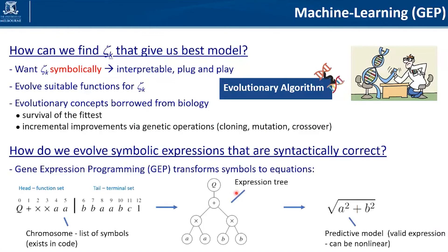This GEP approach transforms symbols to equations by breaking down the chromosome — an individual of a population — into a head that contains the function set with operators such as square root, plus, and times, and a tail that contains a terminal set. By keeping this list of symbols linearly in a code, we can convert it to an expression tree that gives us the predictive model — always a valid and syntactically correct expression. And this expression or model can be nonlinear.